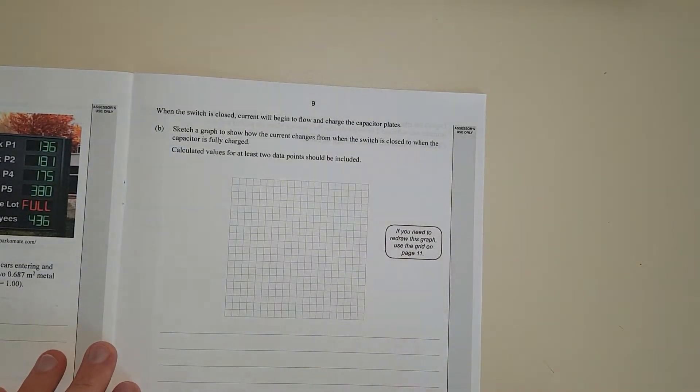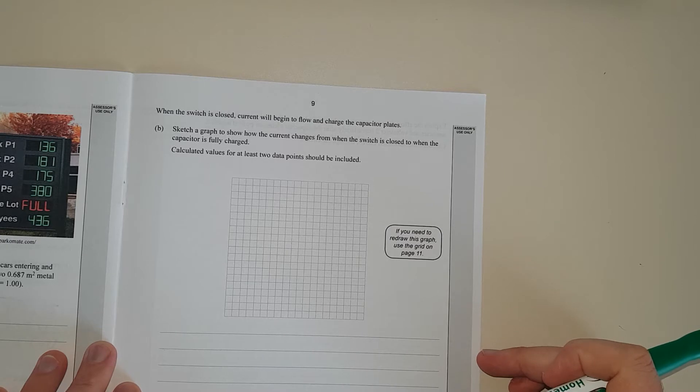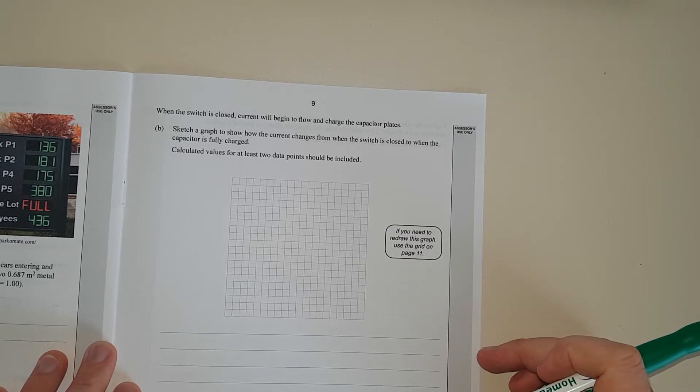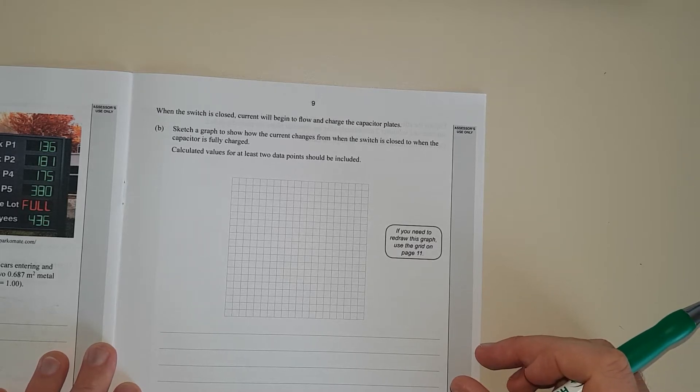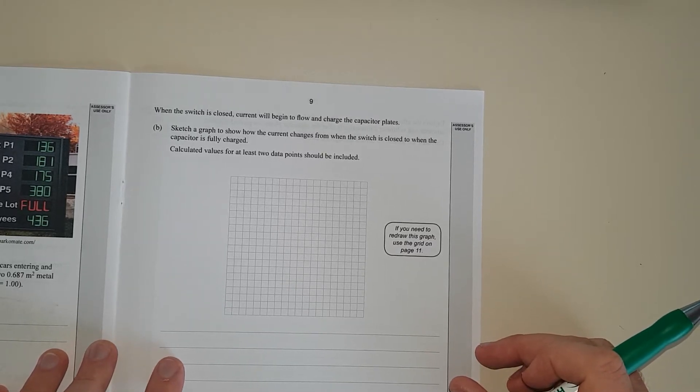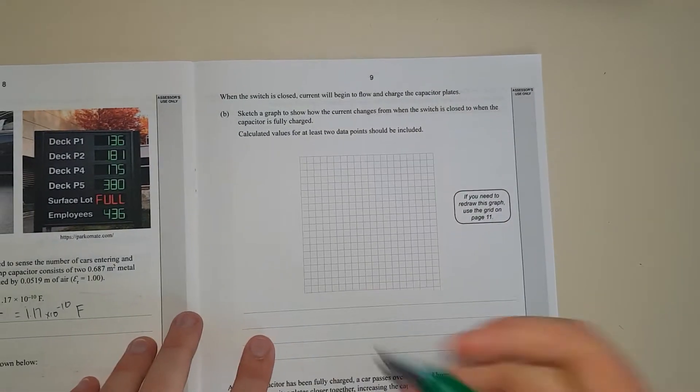When the switch is closed, current will begin to flow and charge the capacitor plates. Sketch your graph to show how current changes from when the switch is closed to when the capacitor is fully charged. Calculate the values for at least two data points. So what we're going to do is we're going to find out the max current. And to do that you just need to pretend the capacitor doesn't even exist.